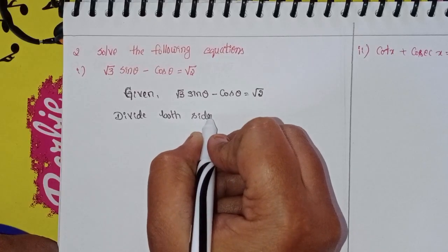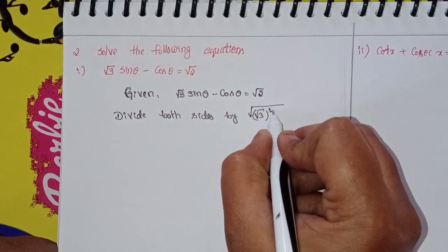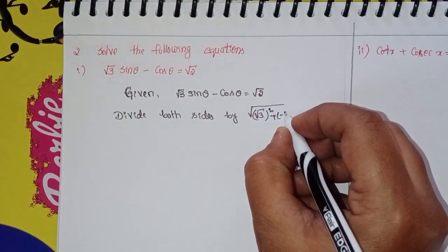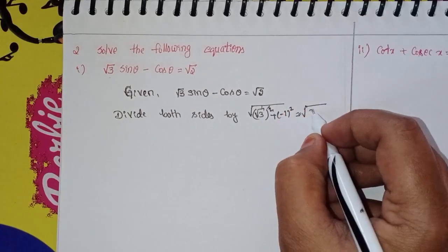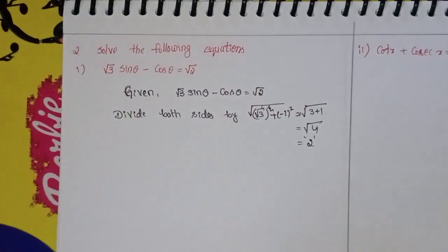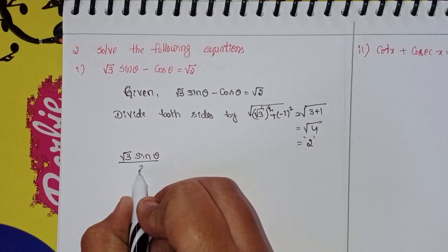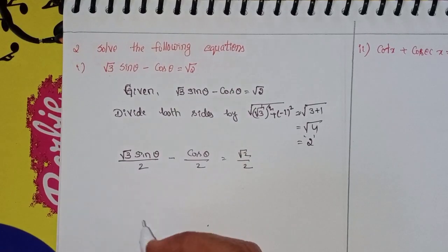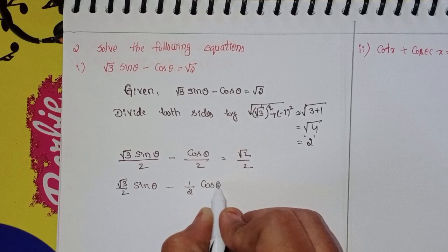Divide both sides by √(√3² + (−1)²) = √(3 + 1) = √4 = 2. So dividing both sides by 2 gives: (√3/2)·sinθ − (1/2)·cosθ = √2/2.